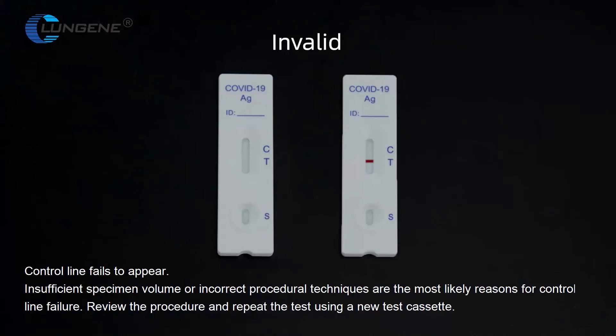Invalid: The control line fails to appear. Insufficient specimen volume or incorrect procedure techniques are the most likely reason for control line failure. Review the procedure and repeat the test using a new test cassette.